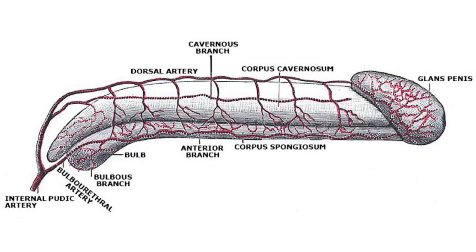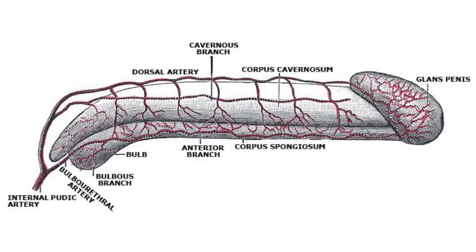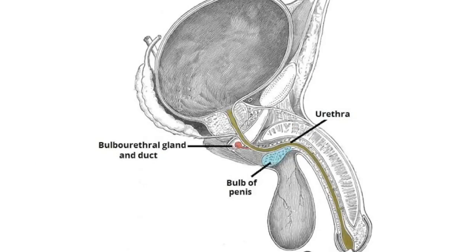The deep arteries of the p structure pierce the crura proximally and run distally near the center of the corpora cavernosa, supplying the erectile tissue within the corpora cavernosa. The arteries of the bulb of the p structure supply the posterior — or bulbous — part of the corpus spongiosum. These arteries also supply the urethra within it as well as the bulbourethral gland.